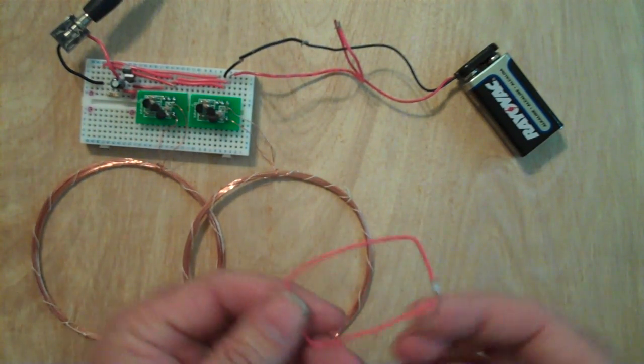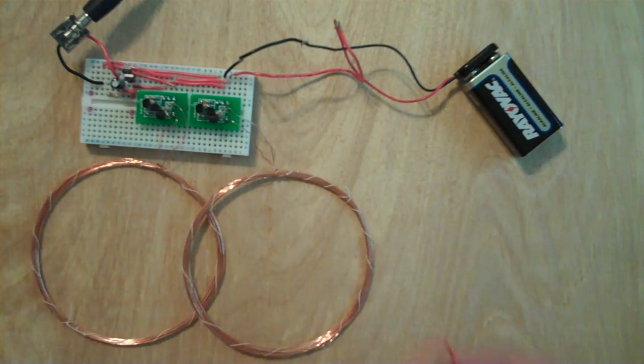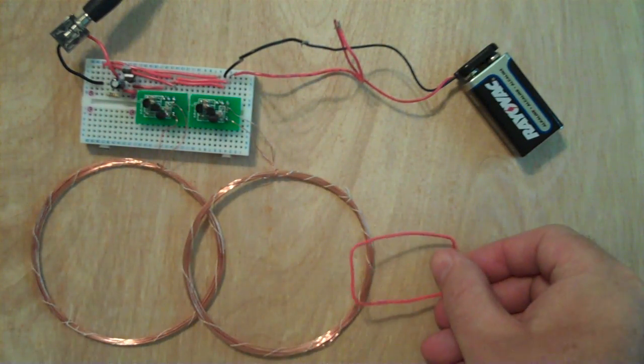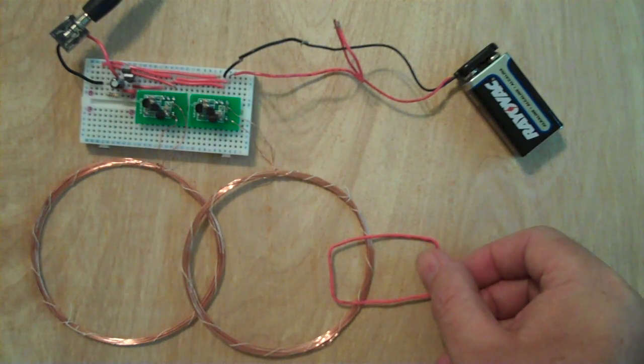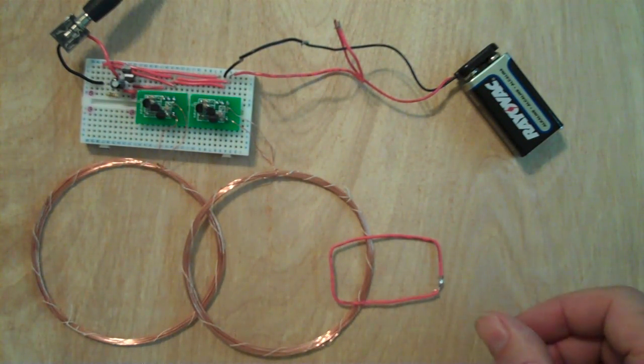So I take this third coil, which is just a closed loop of wire, and put it over this coil and tune it. This is like a fine tune, and I want to tune it until it just stops. Okay, so it's most sensitive right now.